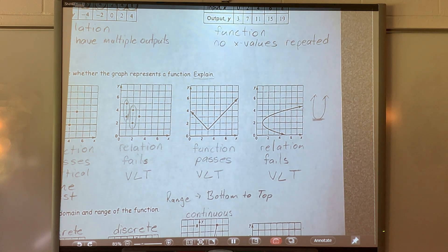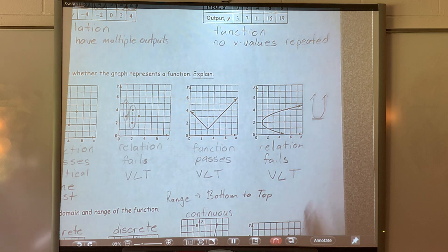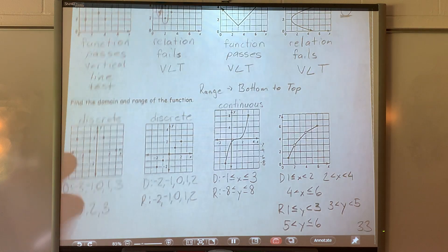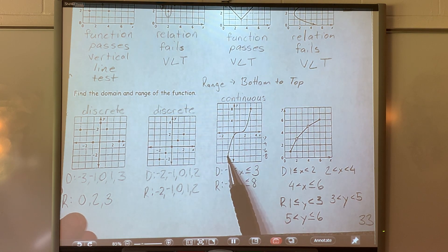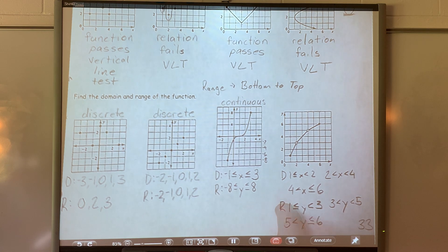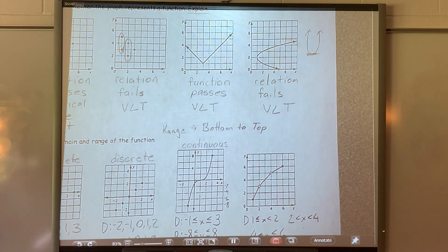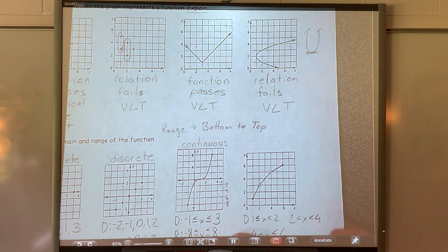It depends on where the graph starts — wherever the bottom of your graph is, because it could be at negative three, zero, or five. Here the bottom was at one; for that other graph it was at negative eight. You just have to look at where your graph actually has a bottom — where it's sitting. If this graph didn't have an arrow, it would actually bottom out at zero.